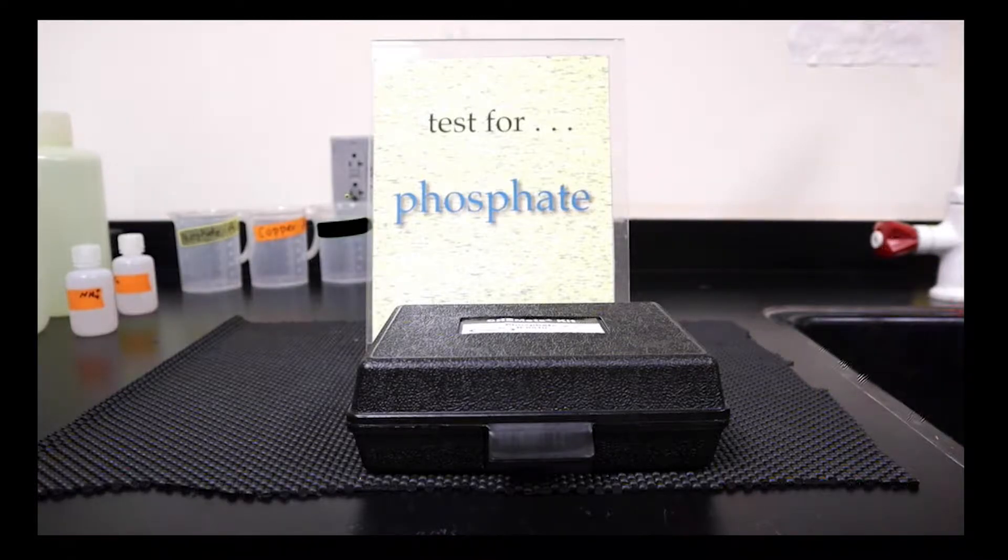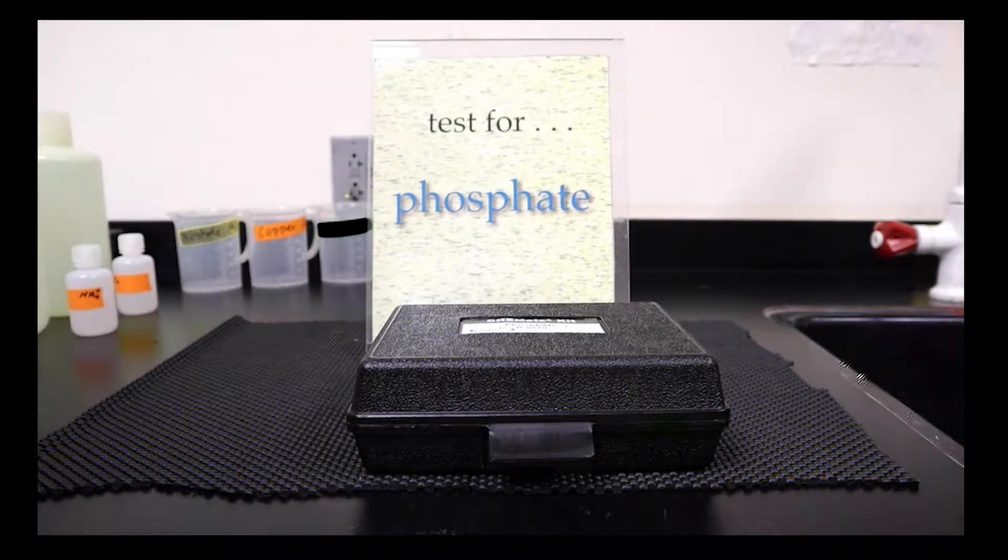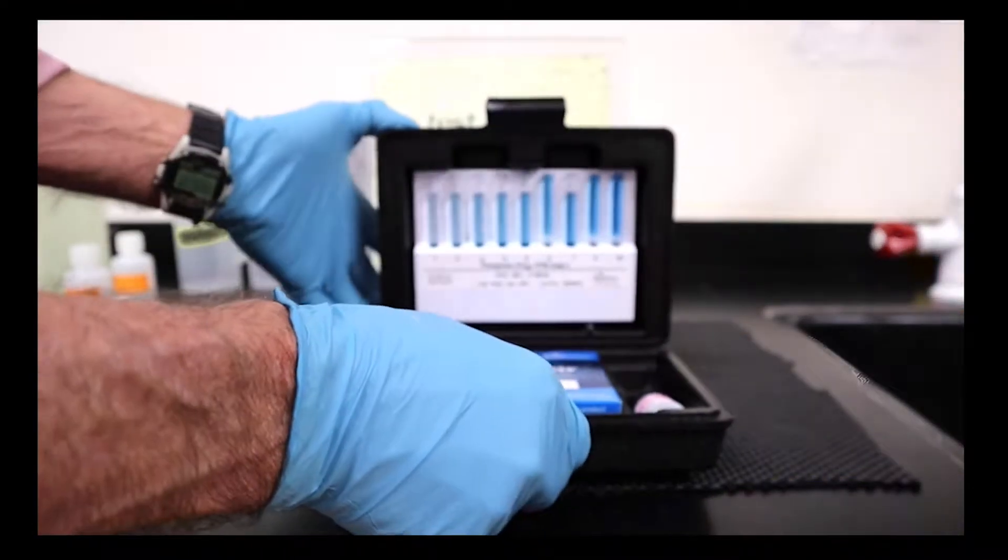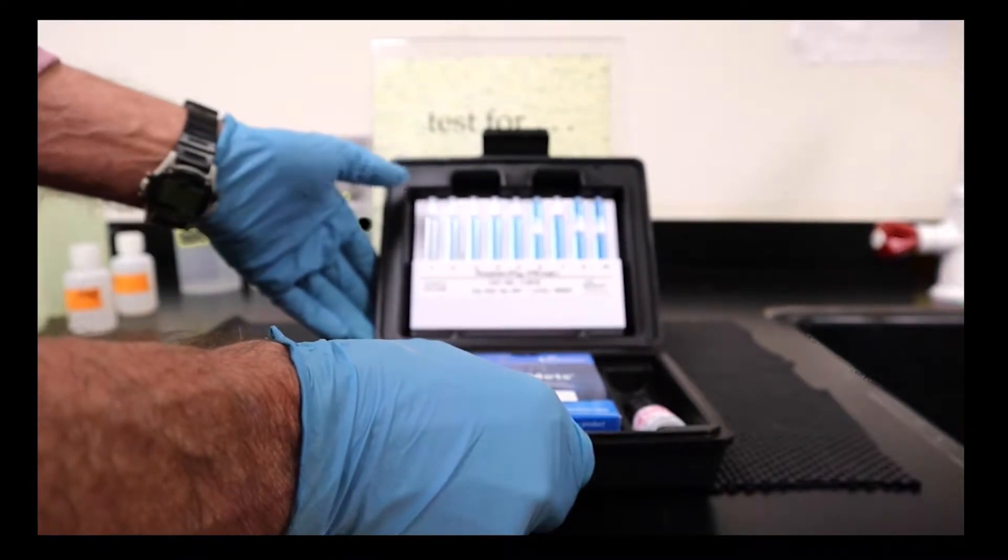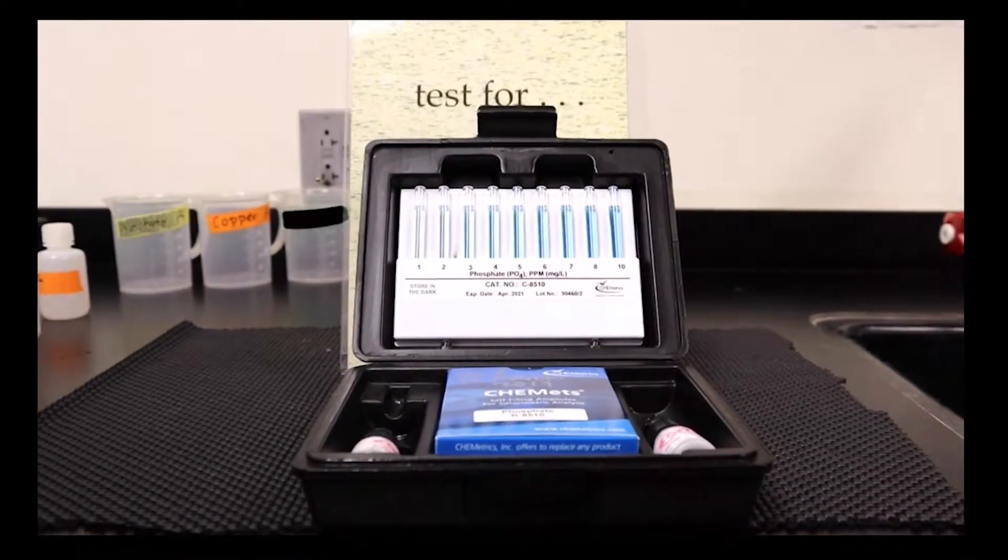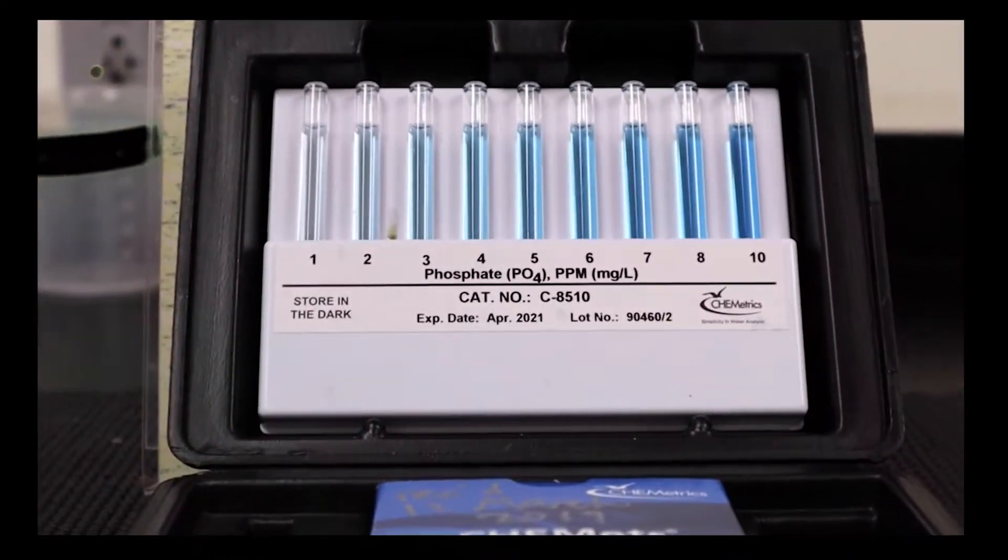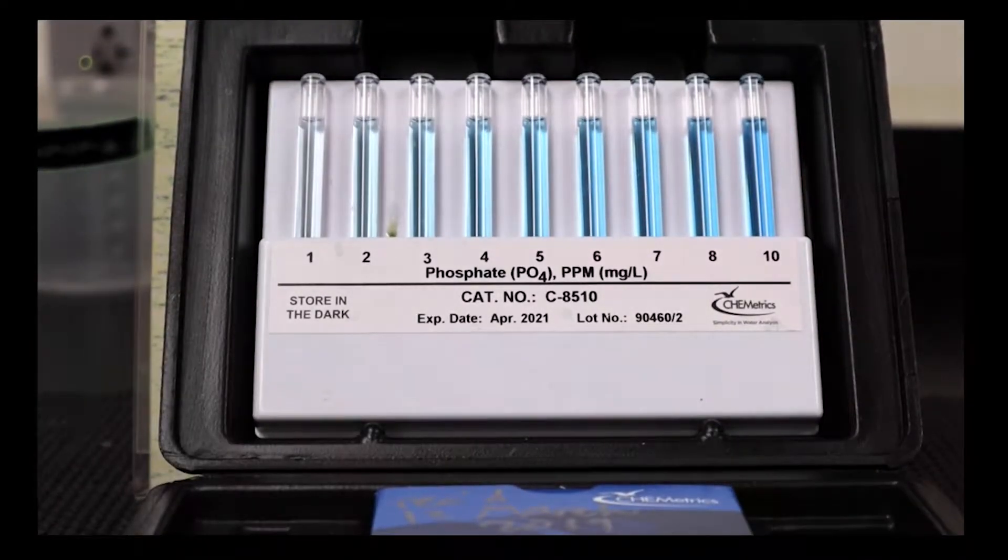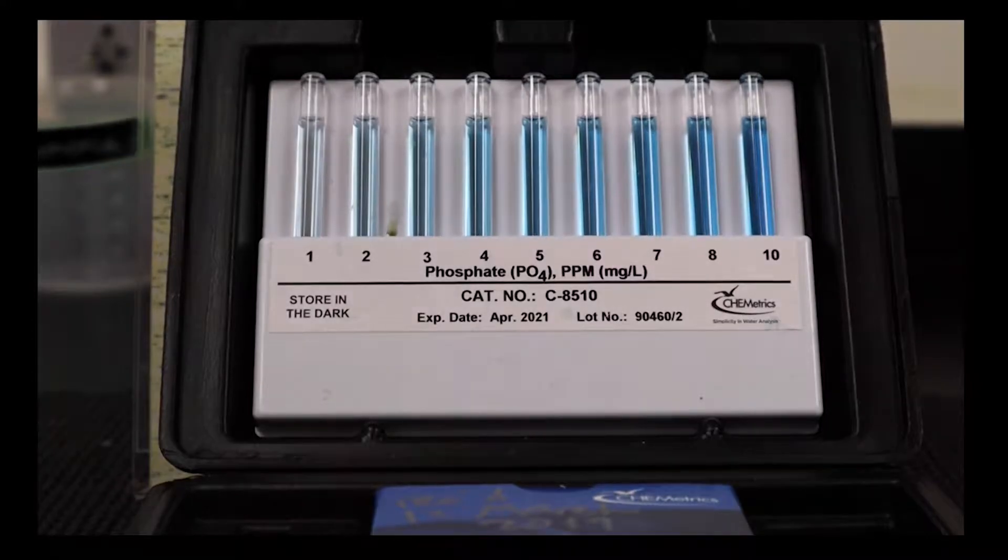There's a little test kit which is really a colorimetric test. What we're going to see is by taking a water sample and adding reagents, we're going to develop a color that depends on the concentration of the potential contaminant.